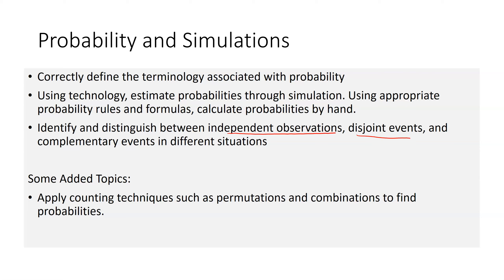Some additional topics added to this section are counting techniques called permutations and combinations. This is an important concept because we'll eventually need to understand how many possible samples we could obtain — how many different unique random samples from some population. If I have a population of 1000 people and I need to randomly select 20 of them, there are millions of different possible sets of 20. We only randomly select one combination out of millions that could exist, and that's going to set us up for inference.